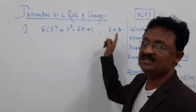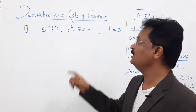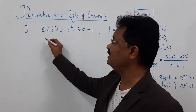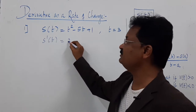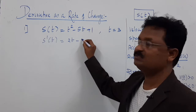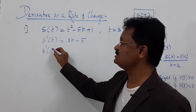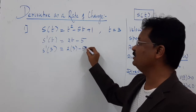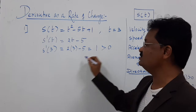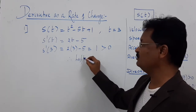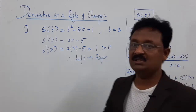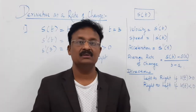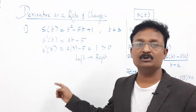Take this simple example: s(t) = t² − 5t + 1. At time t = 3 seconds, find the direction of the moving particle. First, find s dash of t: differentiation of t² is 2t, minus 5. At t = 3, s dash of 3 = 2(3) − 5 = 1, which is positive (greater than 0). So the particle is moving from left to right.